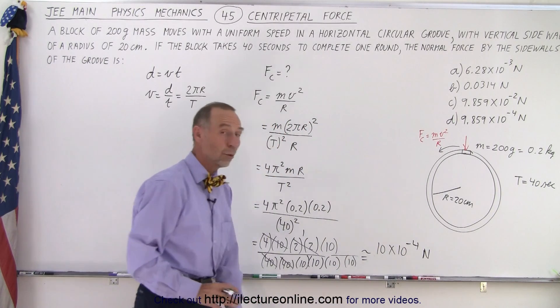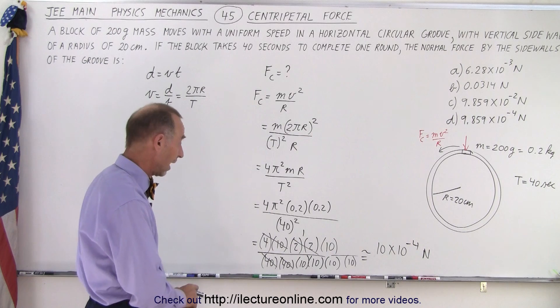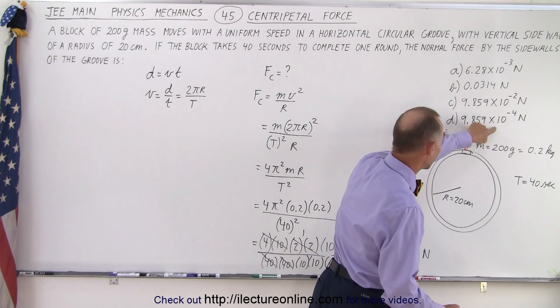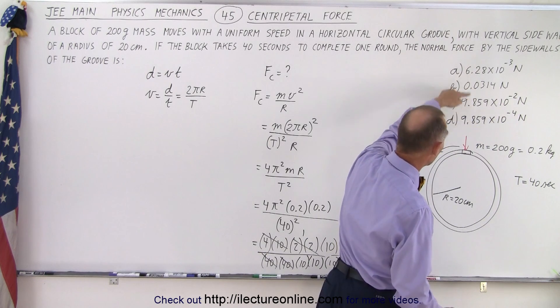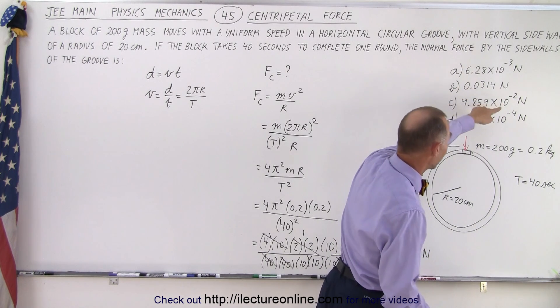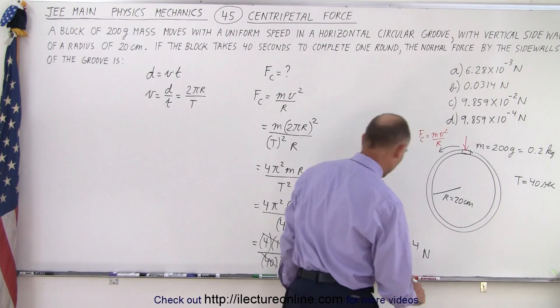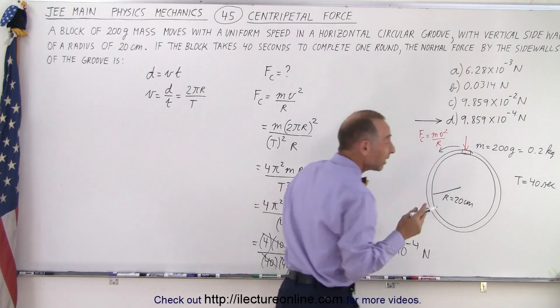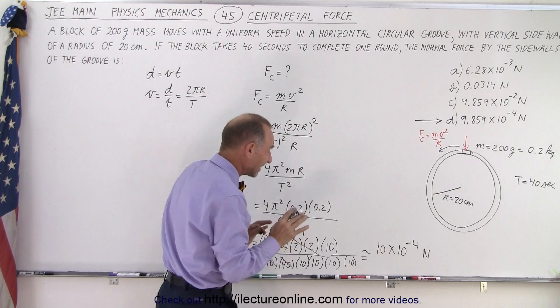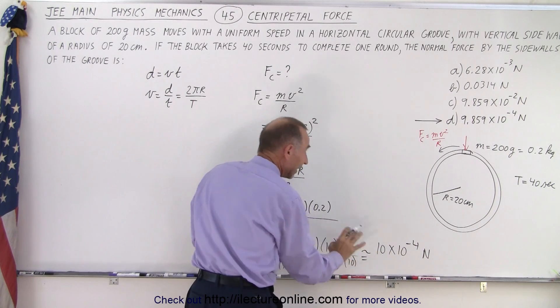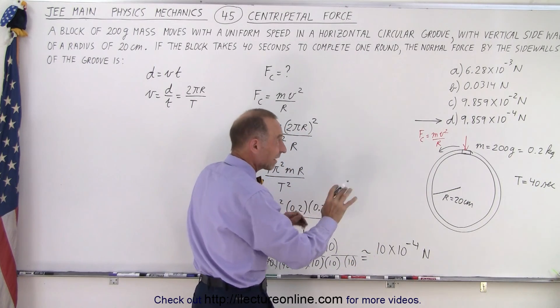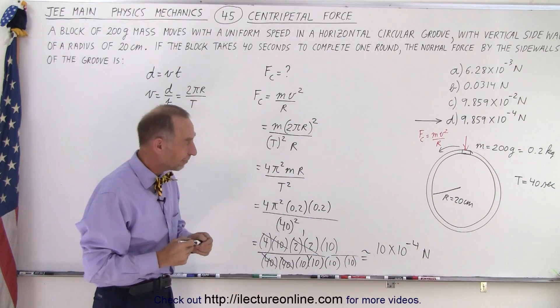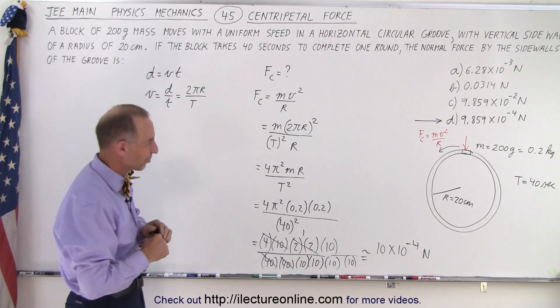So, what answer do I have that's close to that? Well, notice, I have 9.859 times 10 to the minus 4, and no other ones are close to that. This is times 10 to the negative 2, so that's not correct. So it looks like answer D is the correct one, realizing that π² is not exactly 10, it's 9.87 or something like that. It's a little bit less than that. But, hey, close enough, I would say answer D is the correct answer.